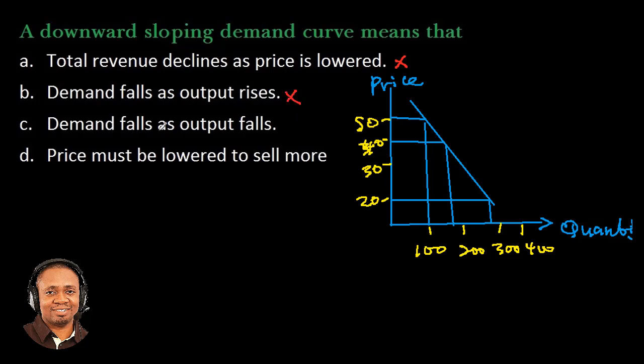Okay, option C: demand falls as output falls. When demand falls, it doesn't necessarily mean that output also falls. What that means is that when demand falls, the price has increased, and it doesn't mean that the output has fallen—that is what led to demand falling or that demand falls will lead to output falling. So this is not correct as well.